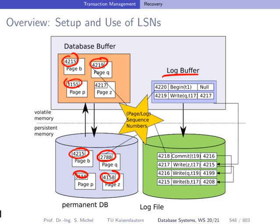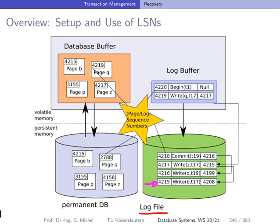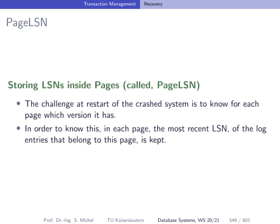Here you see the log buffer and the corresponding log file. When comparing log entries during the redo phase, you look at one entry and ask: do you have to apply this? You don't have to apply it if the log sequence number — for example 4215 — is identical to the page LSN, because that means we have already incorporated this change. Page LSNs are the log sequence numbers of the most recent change to a page, and by using them we ensure that we do not execute an operation from the log multiple times.